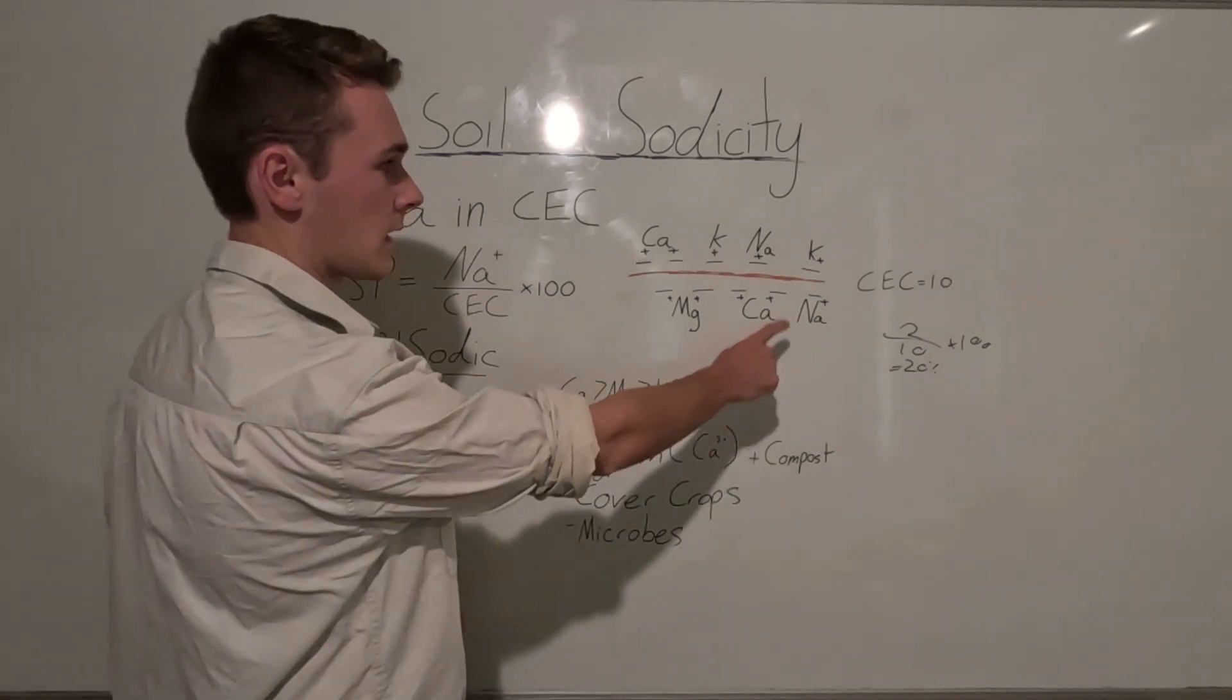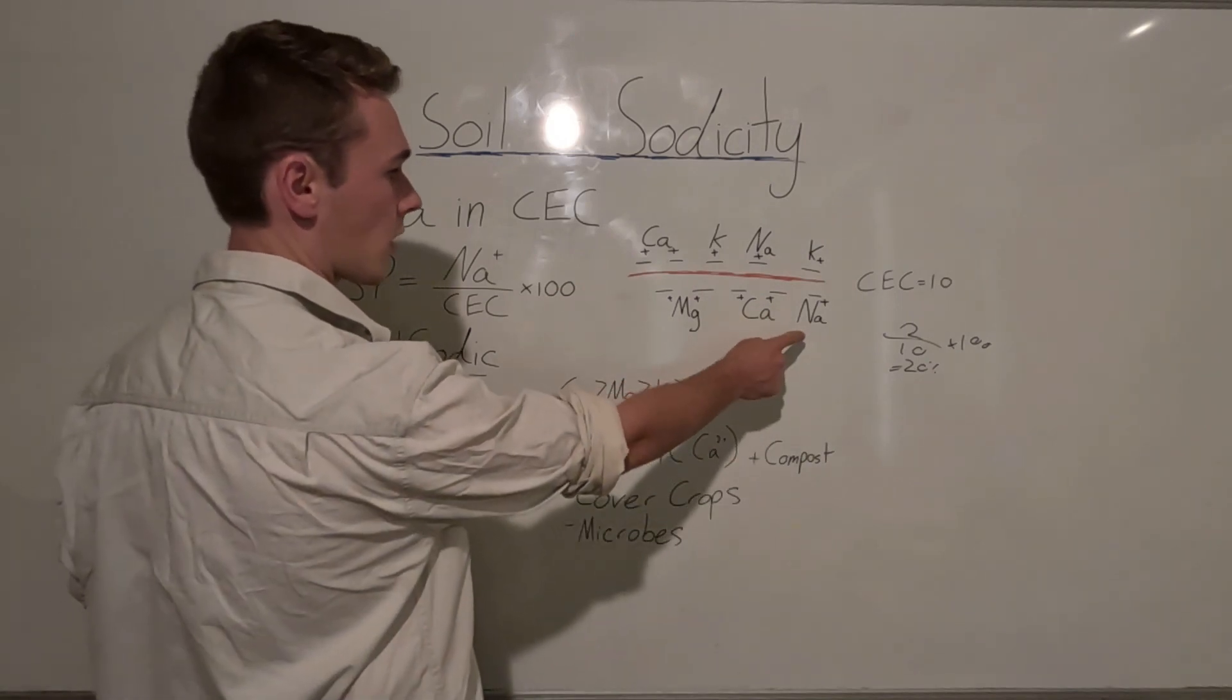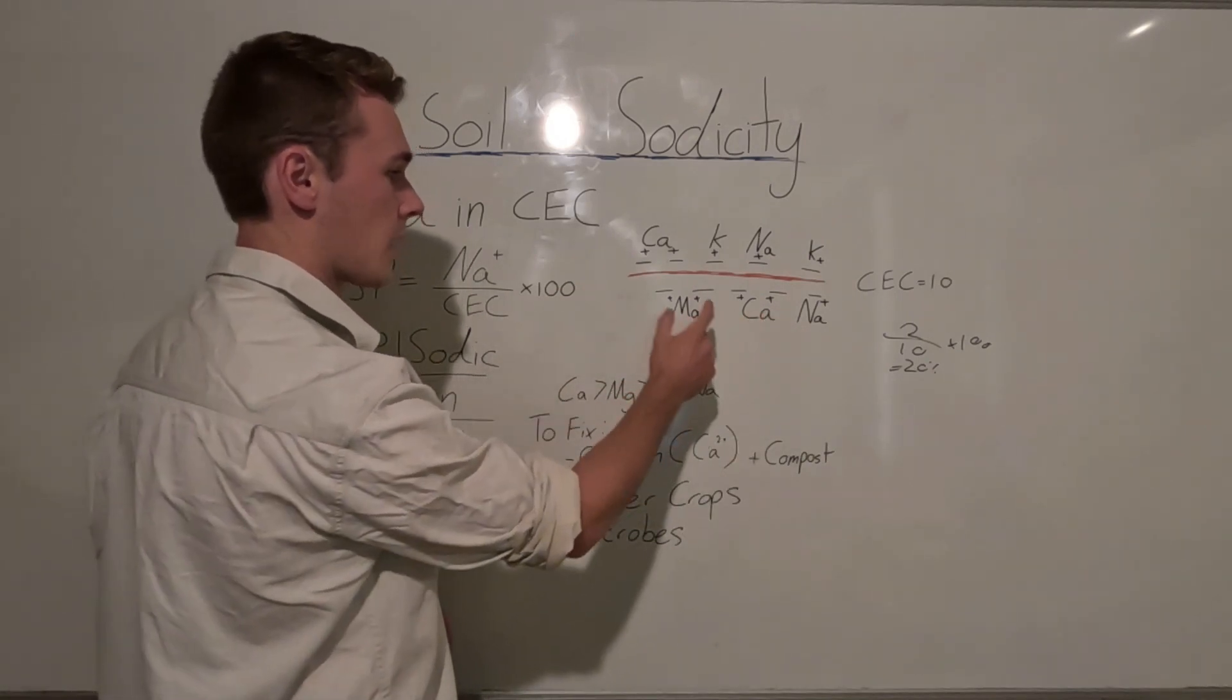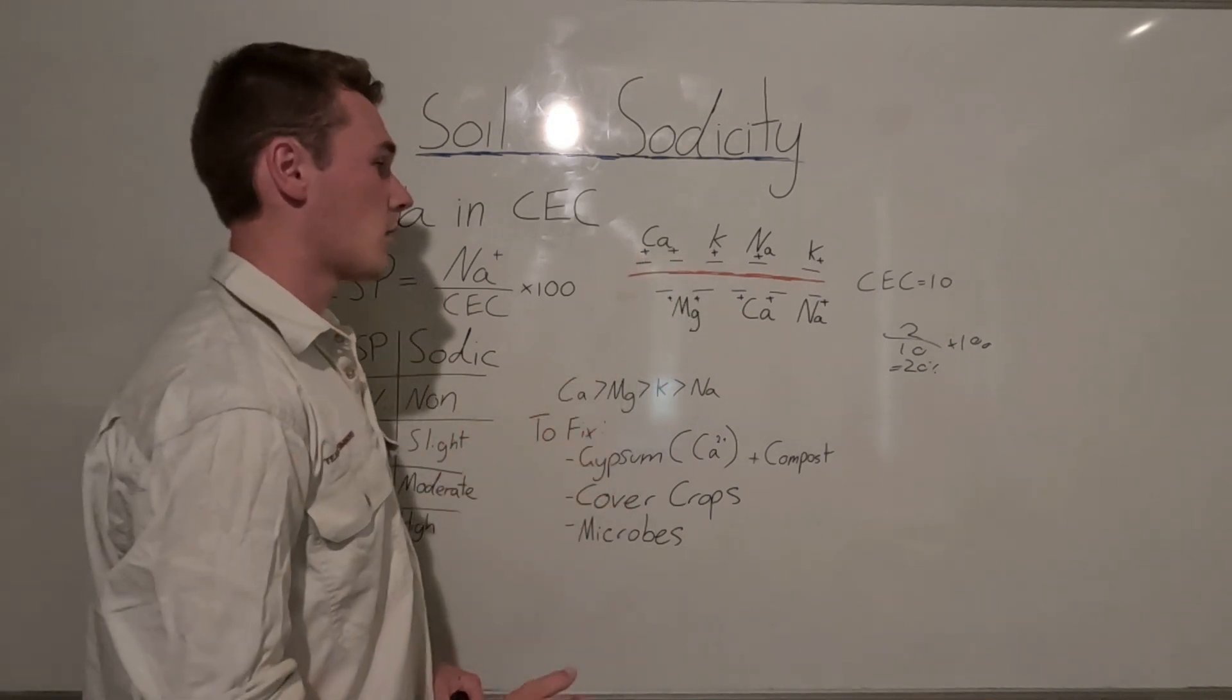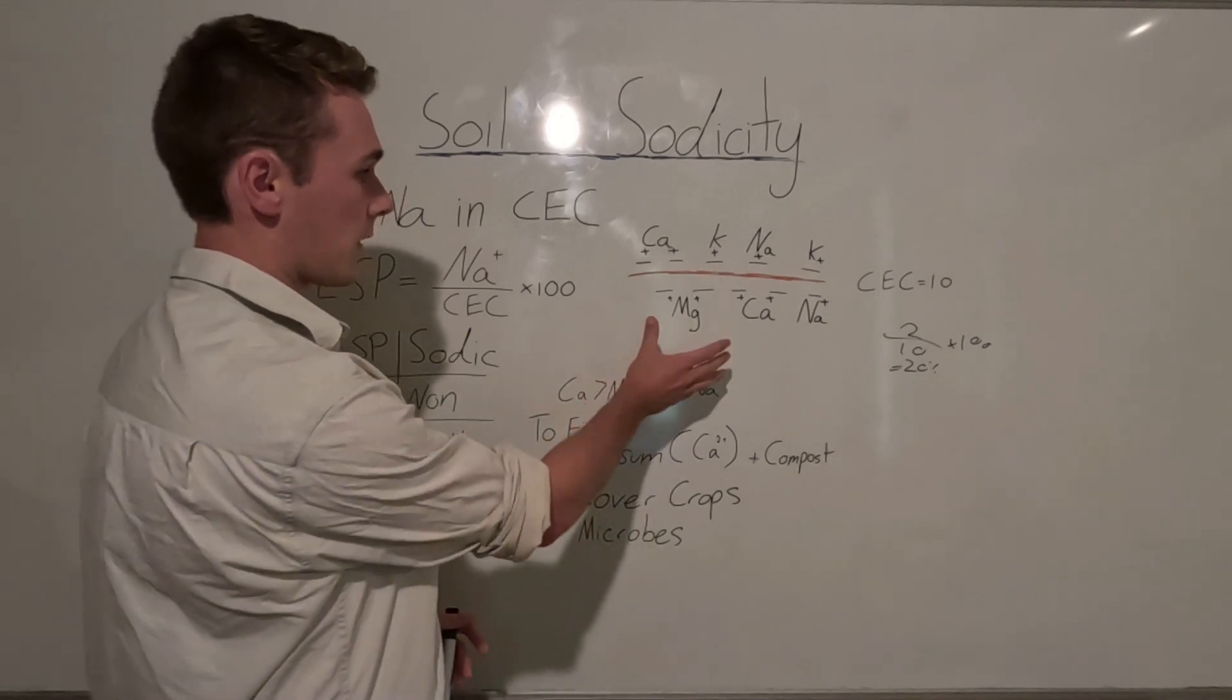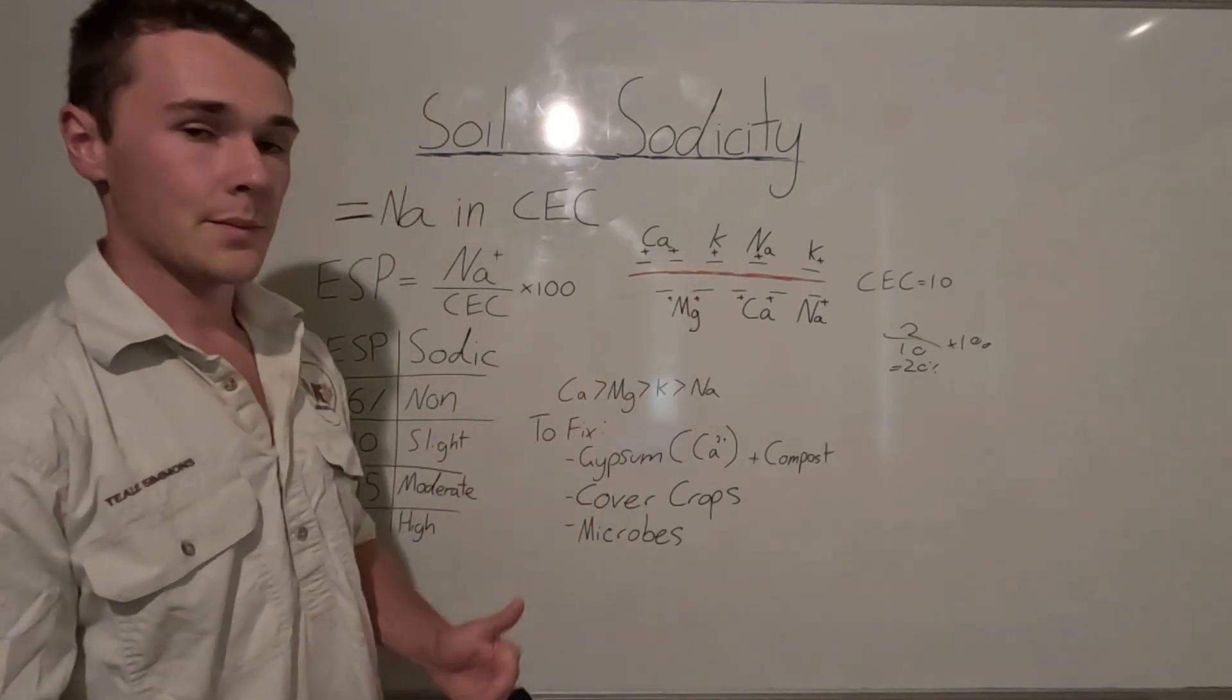Now sodium can also inhibit the uptake of our other cations. And so if we have high amounts of sodium, it can reduce the uptake of calcium and magnesium and potassium in our plants. So we don't really want that because that's going to reduce our yields, especially if our calcium and magnesium are limiting factors.